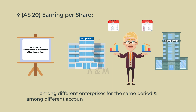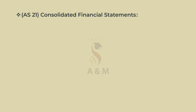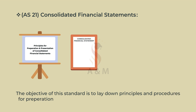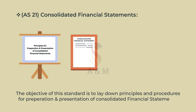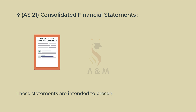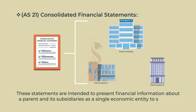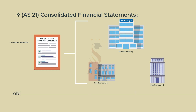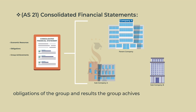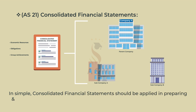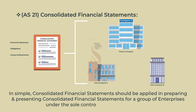Accounting Standard 21: Consolidated Financial Statements. The objective of this standard is to lay down principles and procedures for preparation and presentation of consolidated financial statements. These statements are intended to present financial information about a parent and its subsidiaries as a single economic entity, to show the economic resources controlled by the group, obligations of the group, and results the group achieves with its resources. Consolidated financial statements should be applied in preparing and presenting consolidated financial statements for a group of enterprises under the sole control of a parent enterprise.